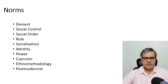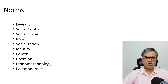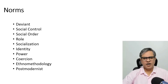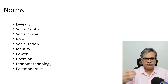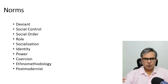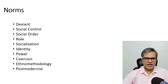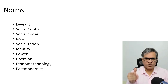While we study about norms, we study about these concepts as well: deviant, social control, social order — how society creates control and how norms facilitate social order; role — how our role defines the norms which we are supposed to follow; socialization — how we learn about these norms in family, in school, in the workplace. When we join a particular workplace, we are given induction and socialization, and besides teaching us about organizational vision and mission, they also teach us about organizational norms.